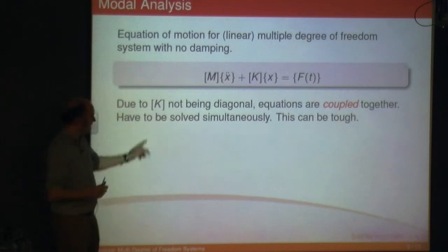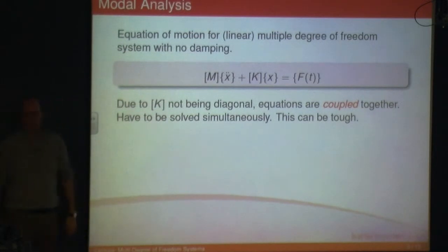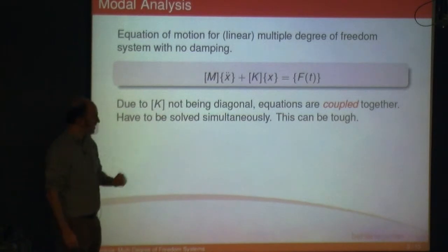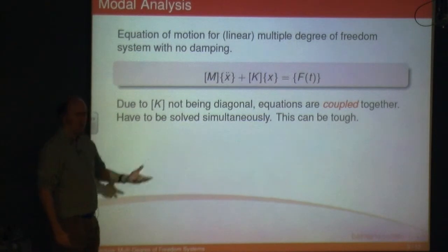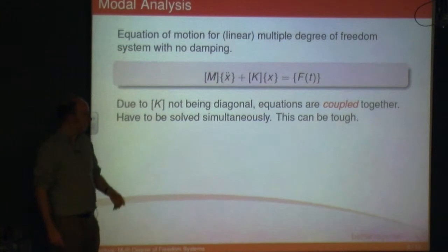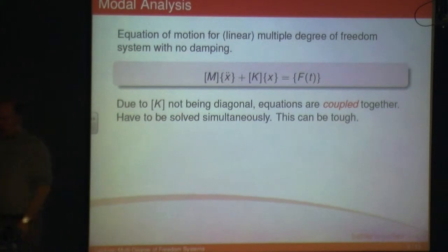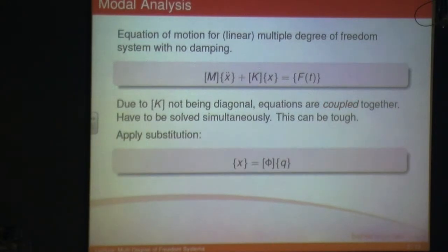Because the masses are coupled together, if you apply Newton's second law to get these equations, you'll end up with x1, x2, and x3 terms in all the equations, as opposed to just dealing with one of those terms. Because they're coupled, you've got to solve them simultaneously. The problem with simultaneous equations is that when you start getting more than two or three variables — and these are differential equations — it gets very difficult. But modal analysis allows you to uncouple them.